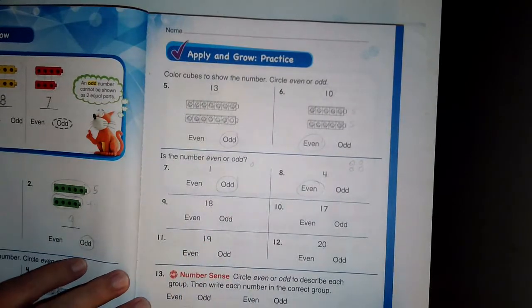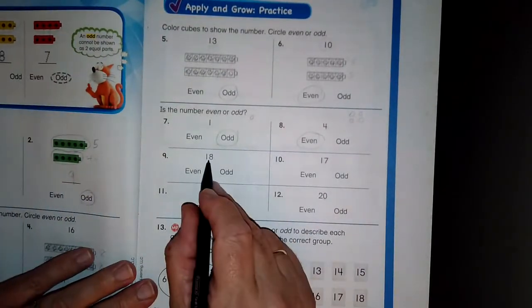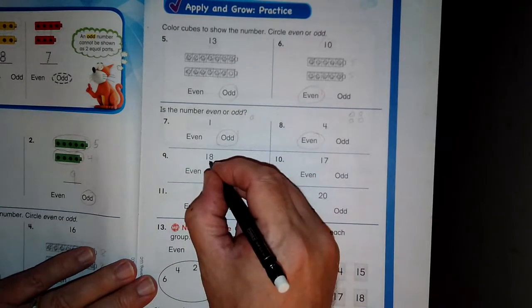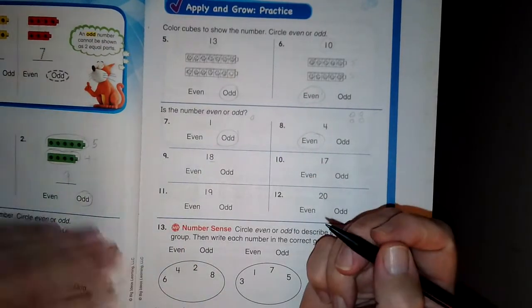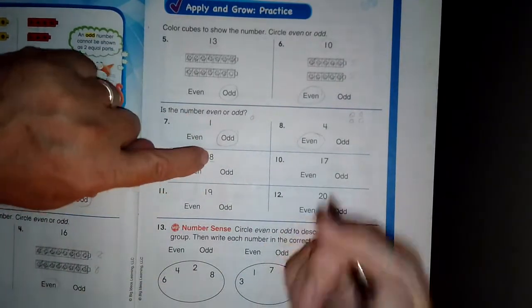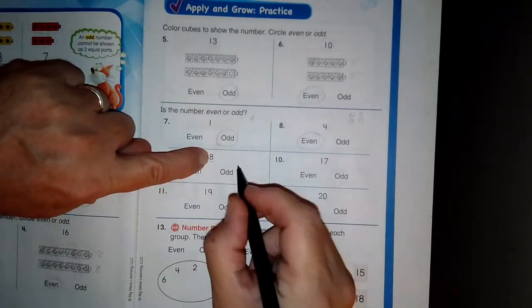Now, this one we talked about this in the class. Eighteen. I have even or odd. To find out, I only have to look at the last number. So I look at this and say eight is my number.